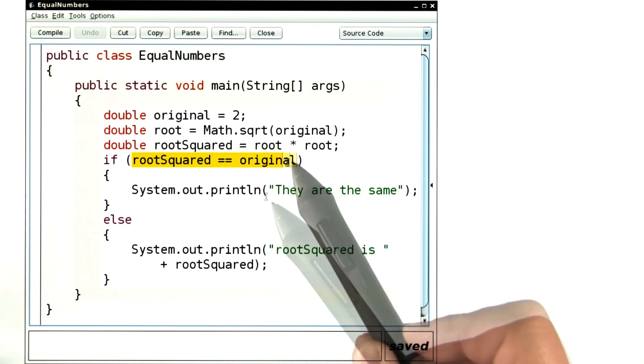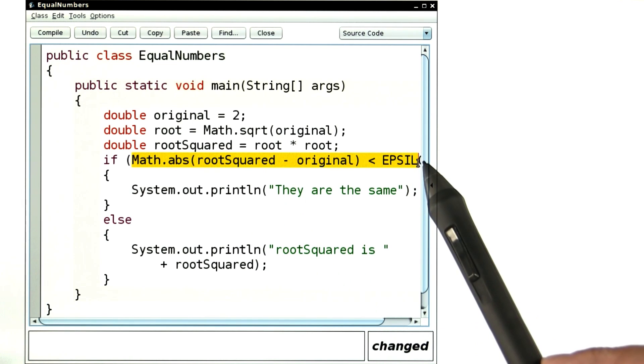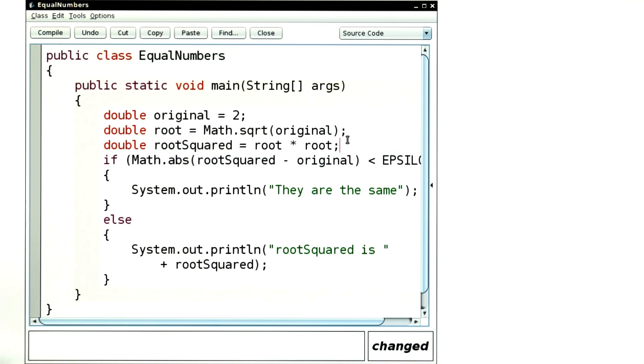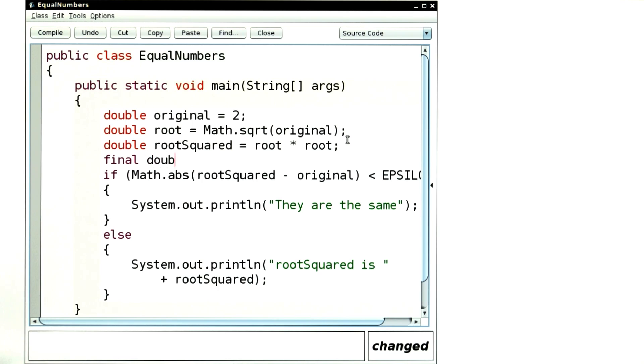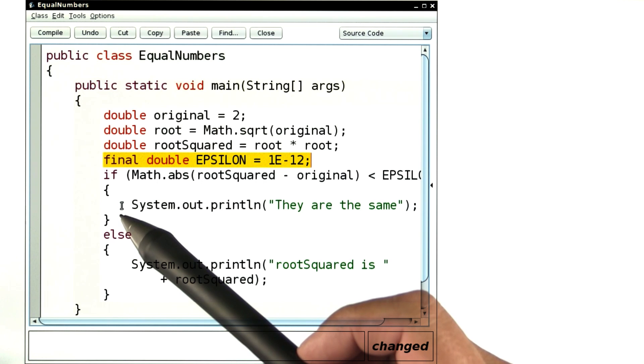Instead of the exact comparison, let's test whether root squared and original are close to each other. That's the test here. And of course, I have to define epsilon using the final keyword to indicate that it's a constant. Now when we run the program, we get the expected result.